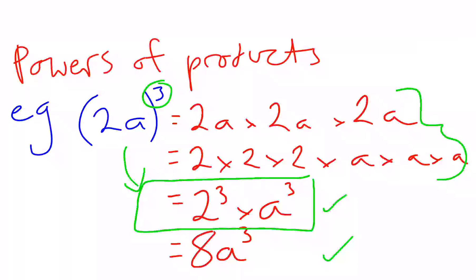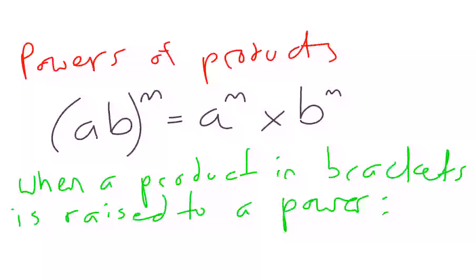So this gives us a rule when we have powers of products. A rule in algebra, a product, here it's a times b, product is times, in a bracket, all raised to a power, means we raise all parts of the product to that power.